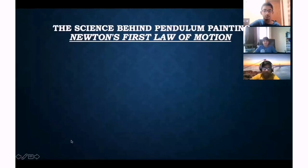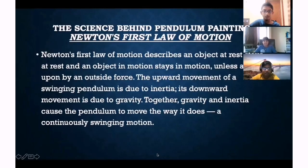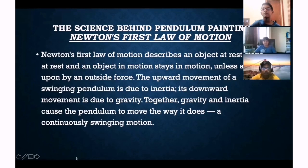Newton's first law of motion describes how an object at rest stays at rest, and an object in motion stays in motion unless acted upon by an outside force. The upward movement of a swinging pendulum is due to inertia, and its downward movement is due to gravity. Together, gravity and inertia cause the pendulum to move in a continuously swinging motion.